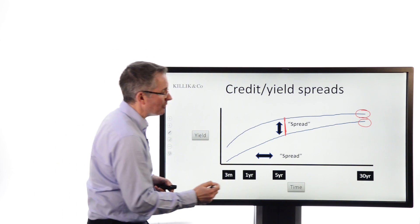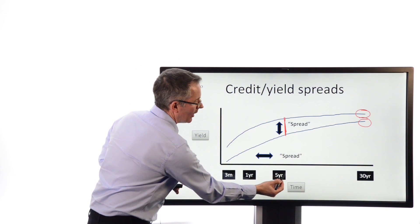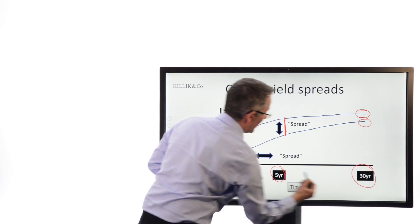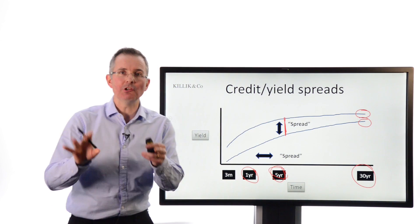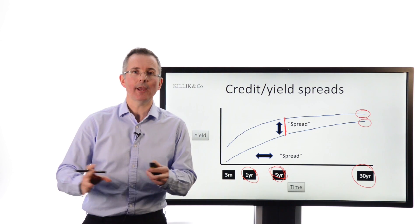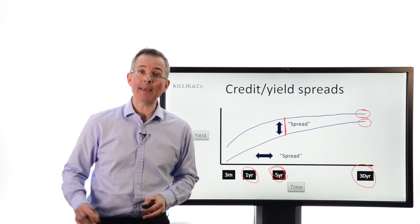And that can be captured in another sort of spread, comparing the yield gap between, say, five-year and one-year or 30-year and five-year. So just a bit of jargon there to keep an eye on, two useful ways of interpreting what's going on between different yield curves or different maturities on the same curve.